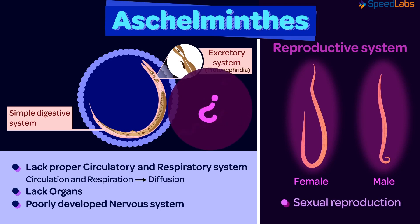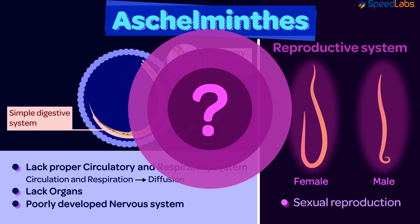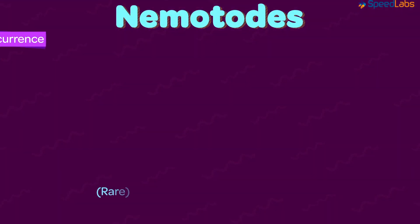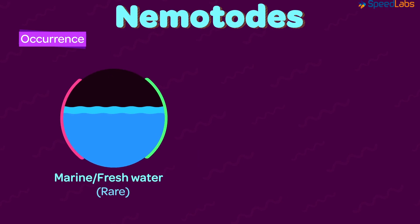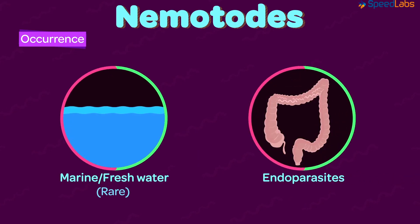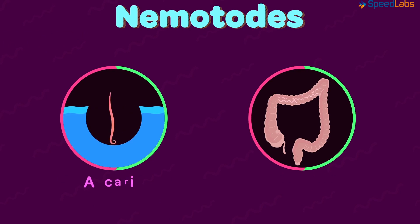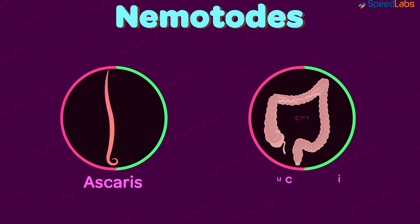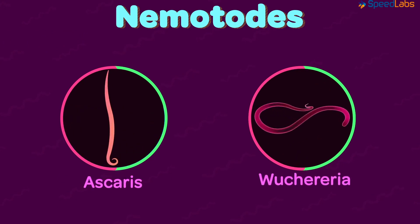Now, can you tell me where these organisms are found? These are very rarely found in marine or freshwater habitats. Most of them are usually endoparasites, meaning they live inside the body of a host organism. Ascaris, Wuchereria, and many others make up the complete category.